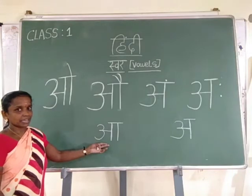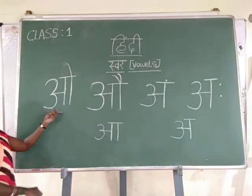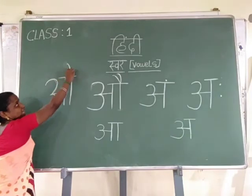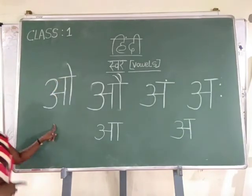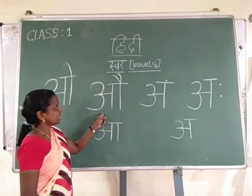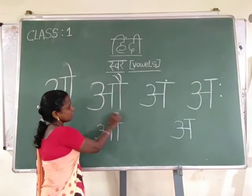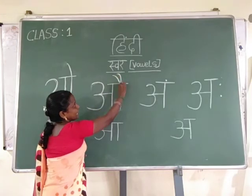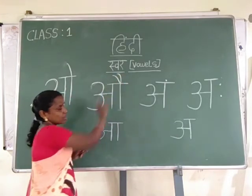I already taught you A. Write A. Put a slanting line on the top. O. You say: O. In the same way, A — you write A. Put two slanting lines on the above. O.